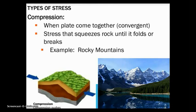Compression occurs at convergent boundaries where plates come together. Stress squeezes the crust until it folds or breaks. The arrows in the diagram move toward each other, just like convergent boundaries. The Rocky Mountains were created by compression.